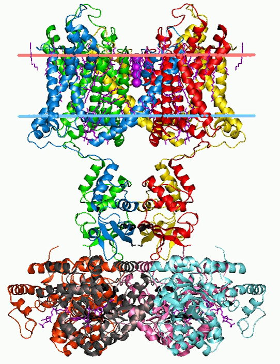Sodium channels are known for working in concert with potassium channels during the development of graded potentials and action potentials. Sodium channels allow an influx of Na+ ions into a neuron, resulting in a depolarization from the resting membrane potential of a neuron to lead to a graded potential or action potential, depending on the degree of depolarization.